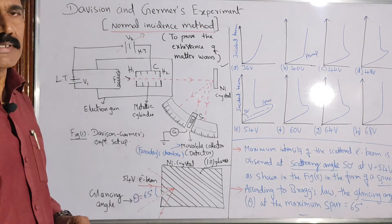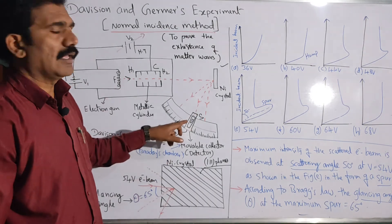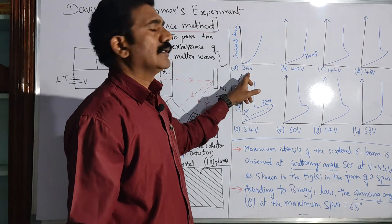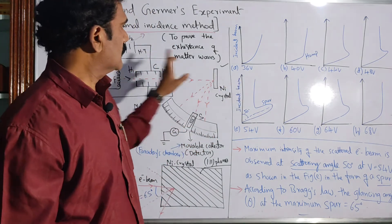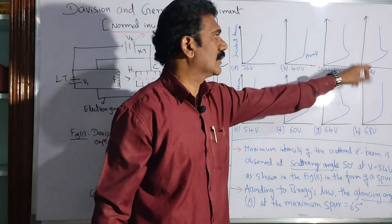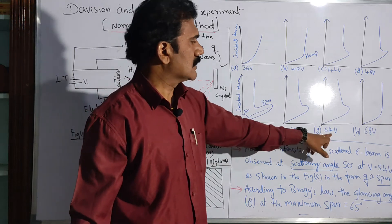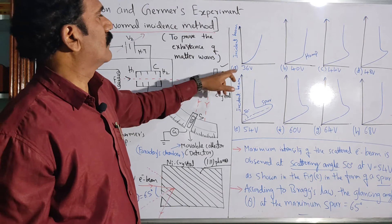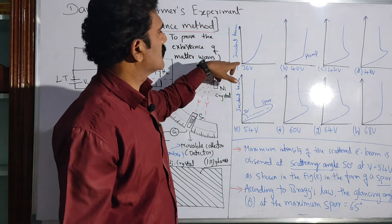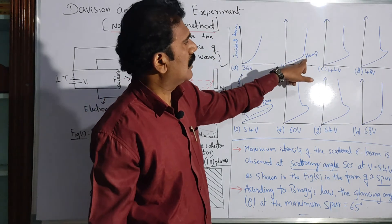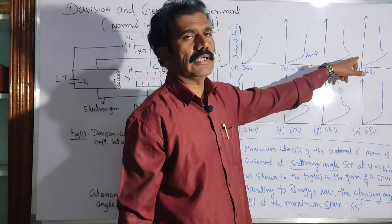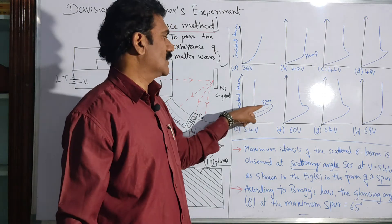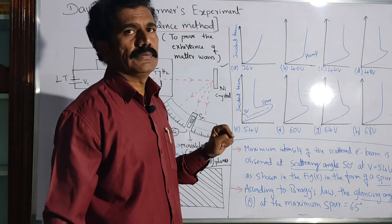The corresponding glancing angle according to Bragg's law is 65 degrees. For this particular position, we can expect that the scattered beam will have maximum intensity. In terms of the variation of the incident beam versus the variation of the applied potential, the experiment is done for various potentials like 36 volts, 40 volts, 44 volts, 48 volts, 54 volts particularly, 60, 64, 68. The applied potential is increased to increase the intensity of the incident electron beam. At 36 volts, the incident beam is just plain without any hump. At 40 volts, a small hump is created in the scattered beam. That hump gradually increases and makes a shape called a spur. A spur-shaped maximum intensity electron beam is formed particularly at 54 volts at the scattering angle of 50 degrees.